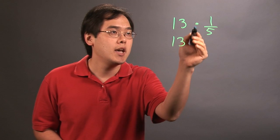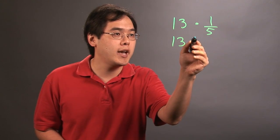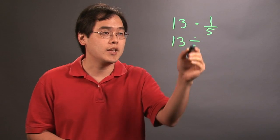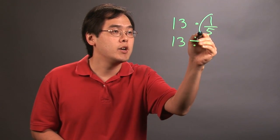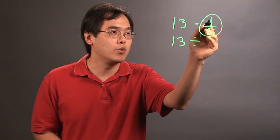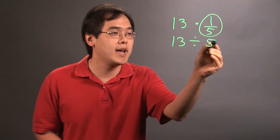You're keeping the first number as it is. Now, we're changing it from multiplication to division. But if you're changing the operation, you're also flipping or finding the reciprocal of the second number. So the reciprocal of 1 fifth is going to be 5.